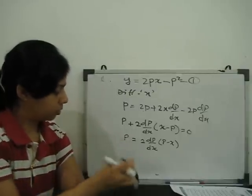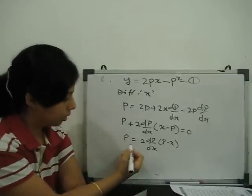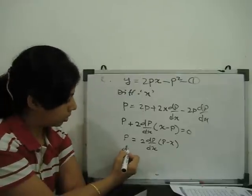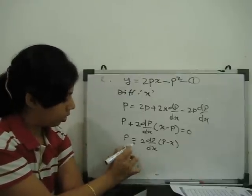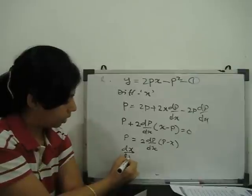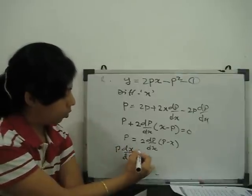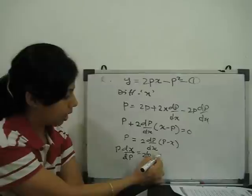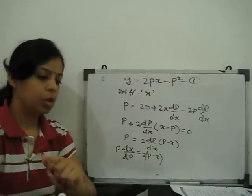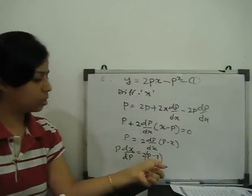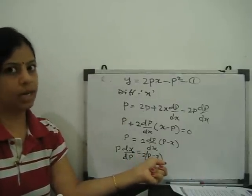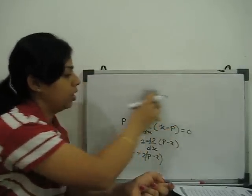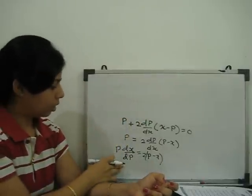So, what we can just simplify. p dx upon dp is equal to 2p minus x. Now we can see this is linear in p and x. So, for linear equation, we have to apply the solution for linear. Which kind of linear?